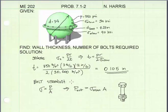For the next step, I'm going to consider the strength of a single bolt. Now, to calculate the strength of a bolt, we're going to use this equation here, sigma is equal to p over a.